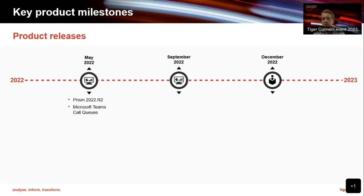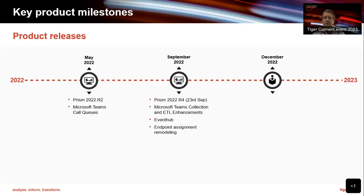We run a constant monthly sprint. In September we released R4 — and I think there may be a typo there, it should have been R3 in May. Prism R4 on the 23rd of September included some Teams collection and ETL enhancements. The reason being that things started to change — we learned new techniques, and the API for Teams was only released around 2020.